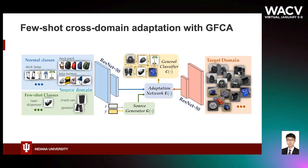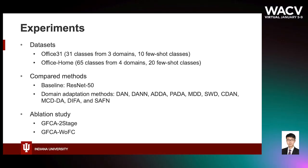Based on maximum mean discrepancy regularization, the cross-domain adaptation seeks the general classifier C for both source and target domain function through effective cross-domain alignment by training the adaptation network E. Specifically, for fair classification across both normal and few-shot classes, the few-shot cross-domain adaptation problem is addressed by promoting few-shot classes through both the generative data augmentation and the weight regularizer on the classifier using a fair classification term.